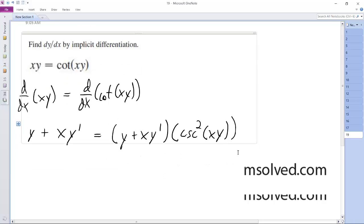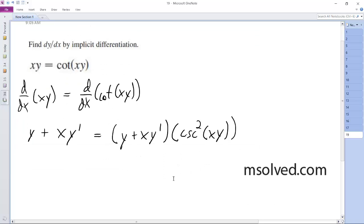Okay, so what we need to do now is get the y primes on the same side, so actually y plus xy prime, and then I'm going to distribute this, so I get y cosecant squared xy plus xy prime cosecant squared xy.